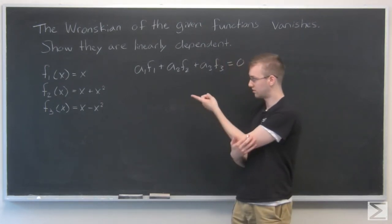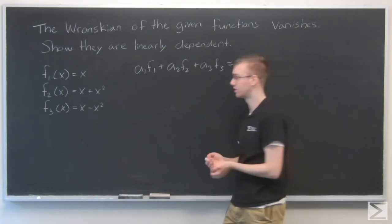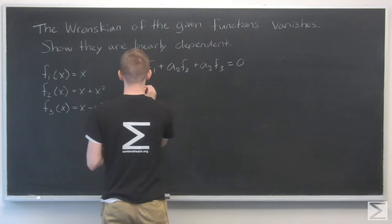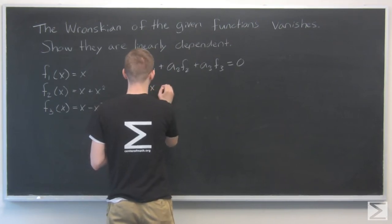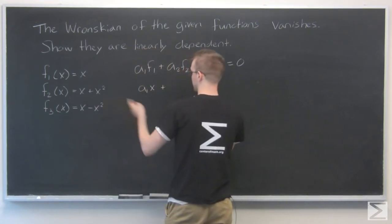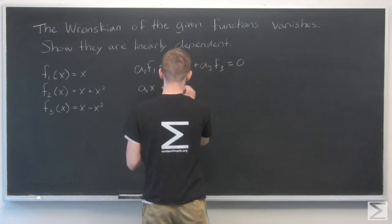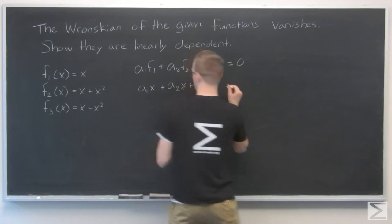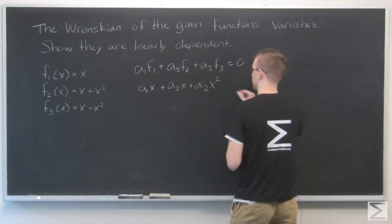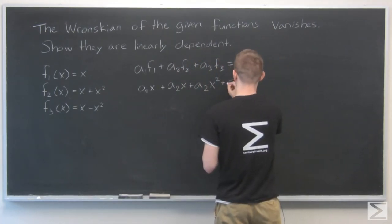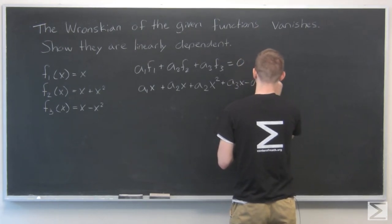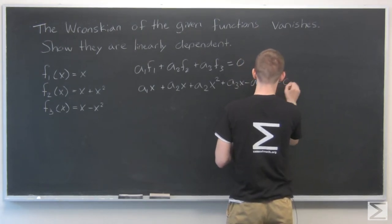Let's plug in the definitions of these functions f1, f2, and f3. f1 is x, so we have a1*x. f2 is x + x², so we have a2*x + a2*x². And f3 is x - x², so we have a3*x - a3*x². And that equals zero.